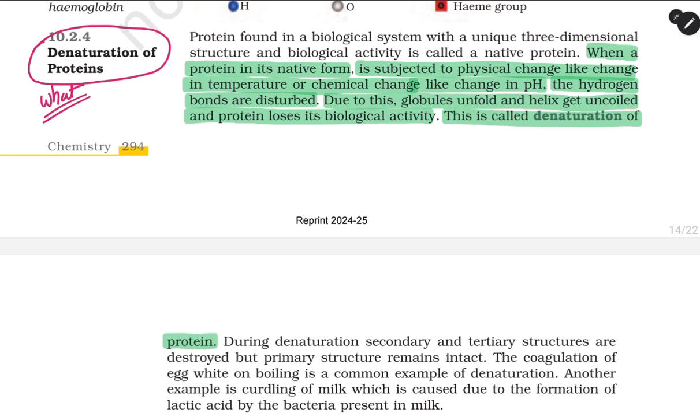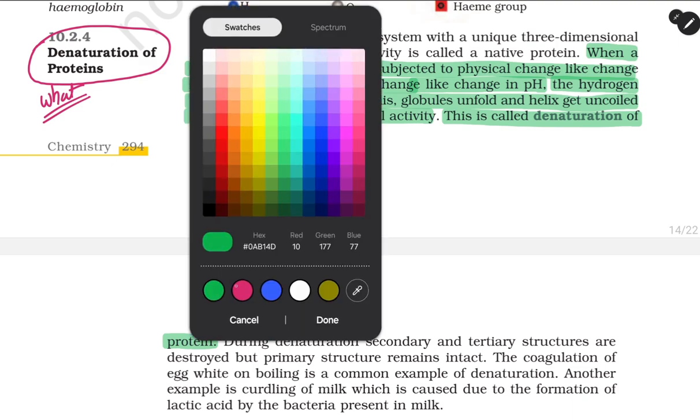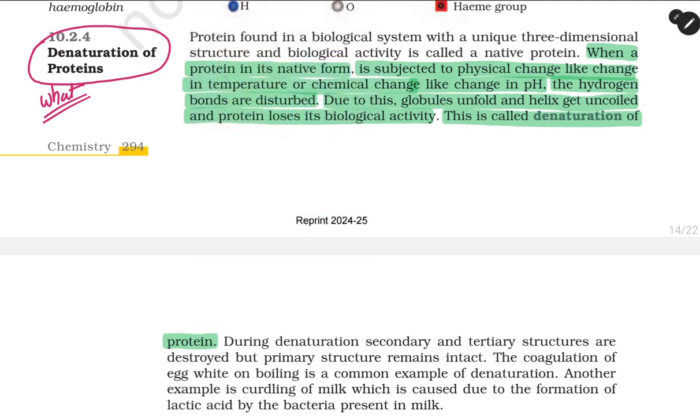The question comes, what is the meaning of it? Basically, what happens is proteins have different types of structures. Whenever amino acids are in a straight chain, it is called primary structure of protein.